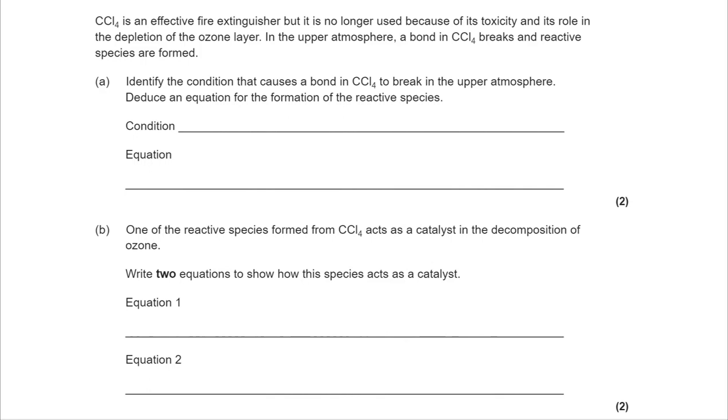So what the information is driving you towards is the fact that this is free radical substitution. You will have learned predominantly about the chlorination of methane. And that would be the CL2 breaking up into two CL radicals. But we're being told very specifically here that we're breaking apart a CCL4. The condition is the same, it's UV light. But if we're breaking CCL4 apart to get a chlorine radical, then we're going to end up with a CCL3 radical and a CL radical.